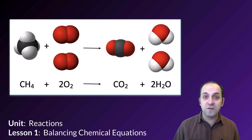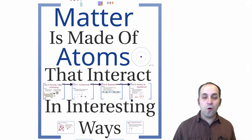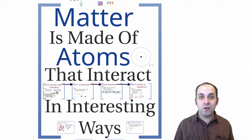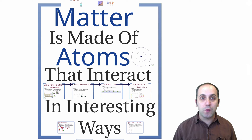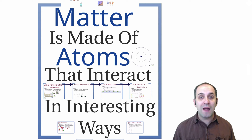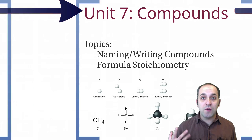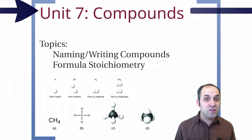Before we do, this is the start of the unit, so let's go to the overall organizational presentation and see where we are in our thinking about chemistry for the year. Our theme is that matter is made of atoms that interact in interesting ways. We've looked at large groups of atoms, the individual atom's structure, the periodic table and chemical bonding in unit six, and then in unit seven we talked about compounds, formulas, equations, and drawing structures.